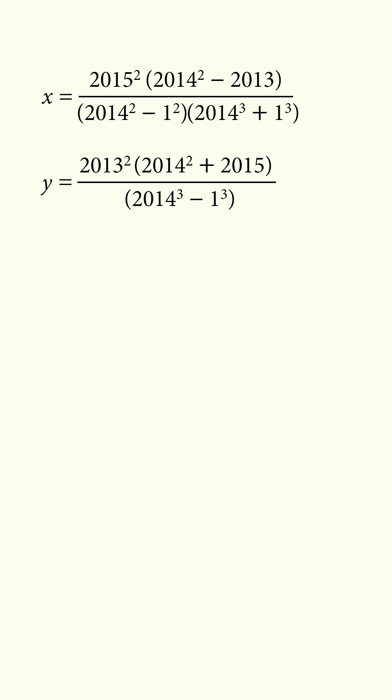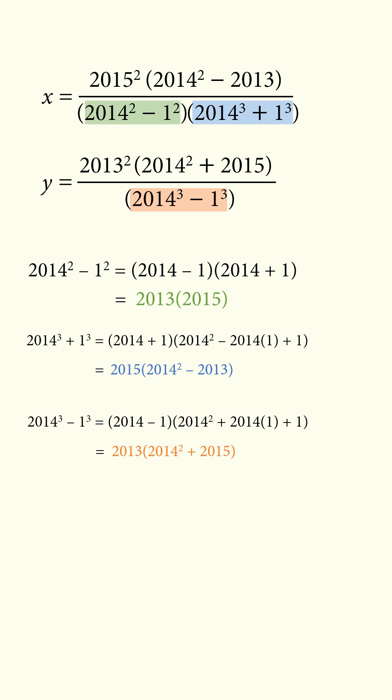we utilize the fact that 1 is equal to 1 squared, which is equal to 1 cubed. Then we apply the difference of squares and difference and sum of cubes formulas. Here we have a difference of squares, here we have a sum of cubes, here we have a difference of cubes.